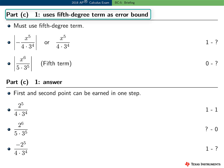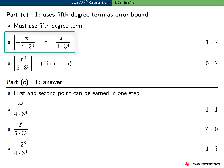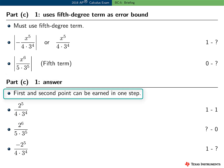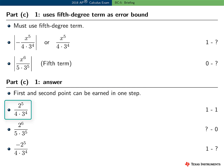The first point in Part C was for using the fifth degree term on the way to producing the error bound — it must be the fifth degree term. Either of two correct forms would earn the point. A response using the fifth term or the sixth degree term does not earn the point. The second point in Part C was for the final answer, and both points could be earned in one step. The first example response earns both points. The next example does not earn the first point, and certainly not the second because the answer is incorrect. The last example earns the first point but not the second.